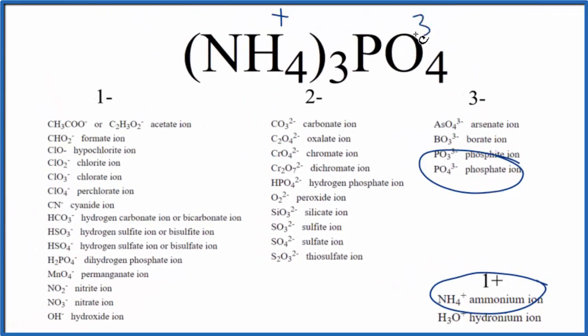That has a 3 minus ionic charge, and these charges are on the whole ion here. So, we know that we have ammonium phosphate, and now we can write the name for NH43PO4.